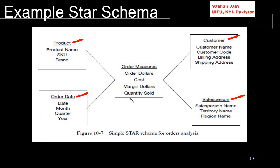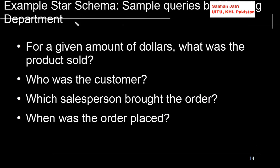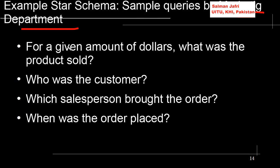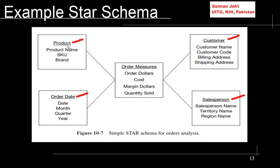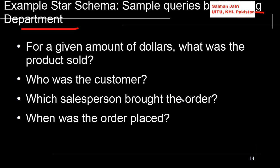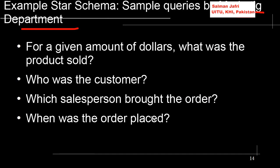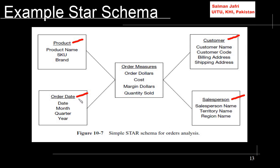Now let's look at some of the sample queries that can be done on this particular star schema for the order analysis. One example query from the marketing department: for a given amount of dollars, what was the product sold? This query would involve the dollars and the product dimension. Who was the customer? — so customer and product dimensions would be involved. Which sales person brought the order? — the sales person dimension would be involved. When was the order placed? — the order date dimension would be involved.